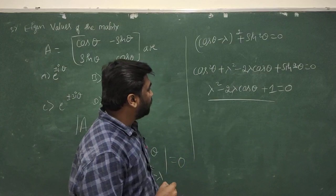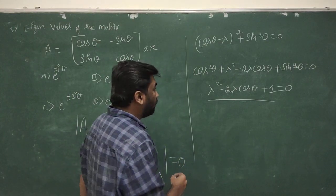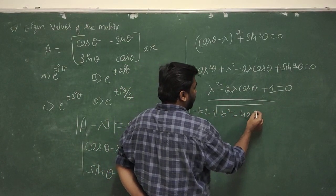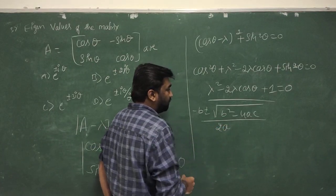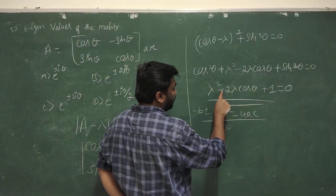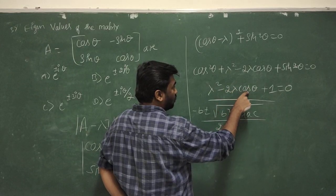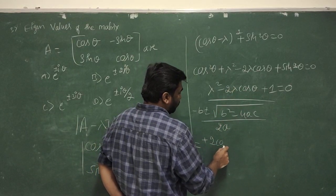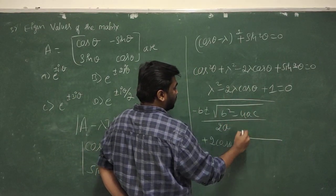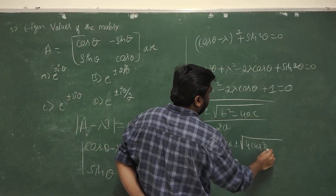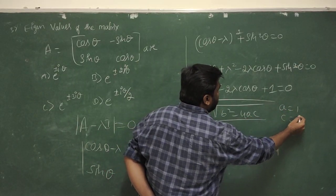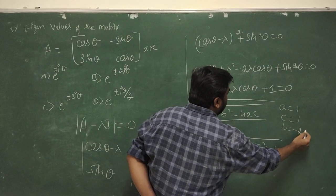This is a quadratic equation of the form Ax² plus Bx plus C. Using the quadratic formula: λ equals (minus B plus or minus √(B² minus 4AC)) divided by 2A. Substituting: B is minus 2 cos θ, so minus B is 2 cos θ; B² is 4 cos²θ; A equals 1 and C equals 1.